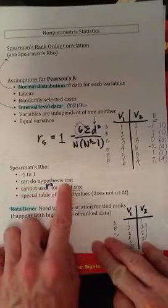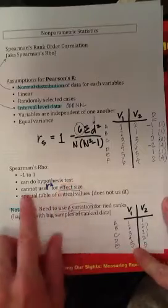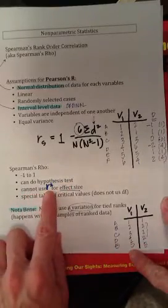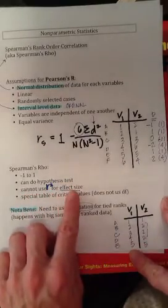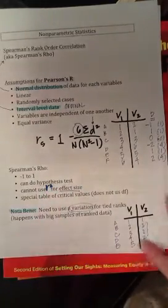You can do the hypothesis test with Spearman's Rho just as you can with Pearson's R. You cannot, however, use R-squared to calculate the effect size for Spearman's Rho, and that's because this is non-parametric because you don't have necessarily interval data, so it doesn't make sense to use R-squared.